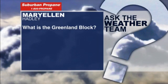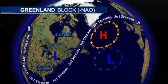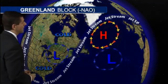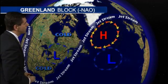Propane's Ask the Weather Team tonight — our question comes from Mary Ellen up in Hadley. Mary Ellen wants to know about the Greenland block: specifically, what is it? The best way to show you is with a graphic of the main jet stream pattern. This is essentially the Greenland block — that's Greenland, here's the United States and Canada — and this maps out the weather pattern we've been dealing with.